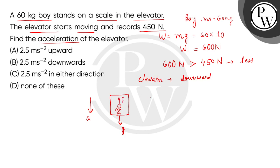If we convert it to an equation, we will get M A equals M G minus F. So A is G minus F divided by M. Now, the value of G is 10, F is 450, and the mass of the boy is 60.